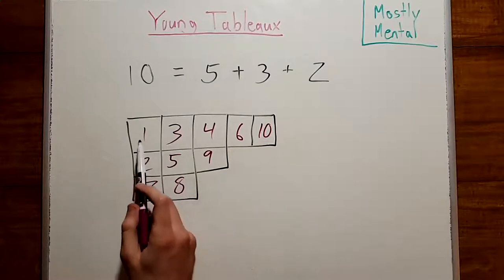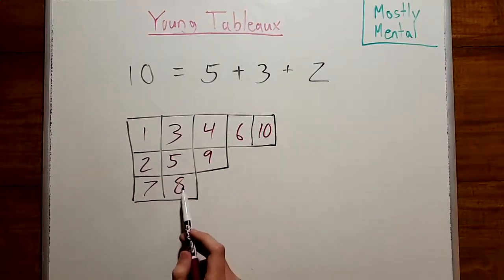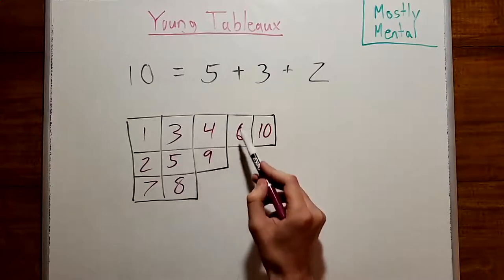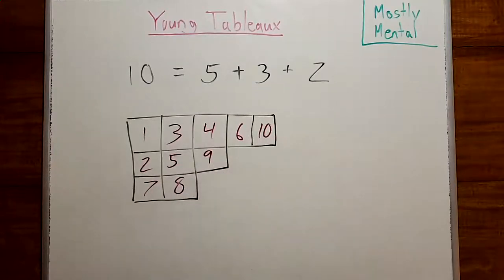Or we might fill the numbers in order, 1 through 10, going horizontally, or going vertically. Or in total, we might fill it in any of 450 possible ways.